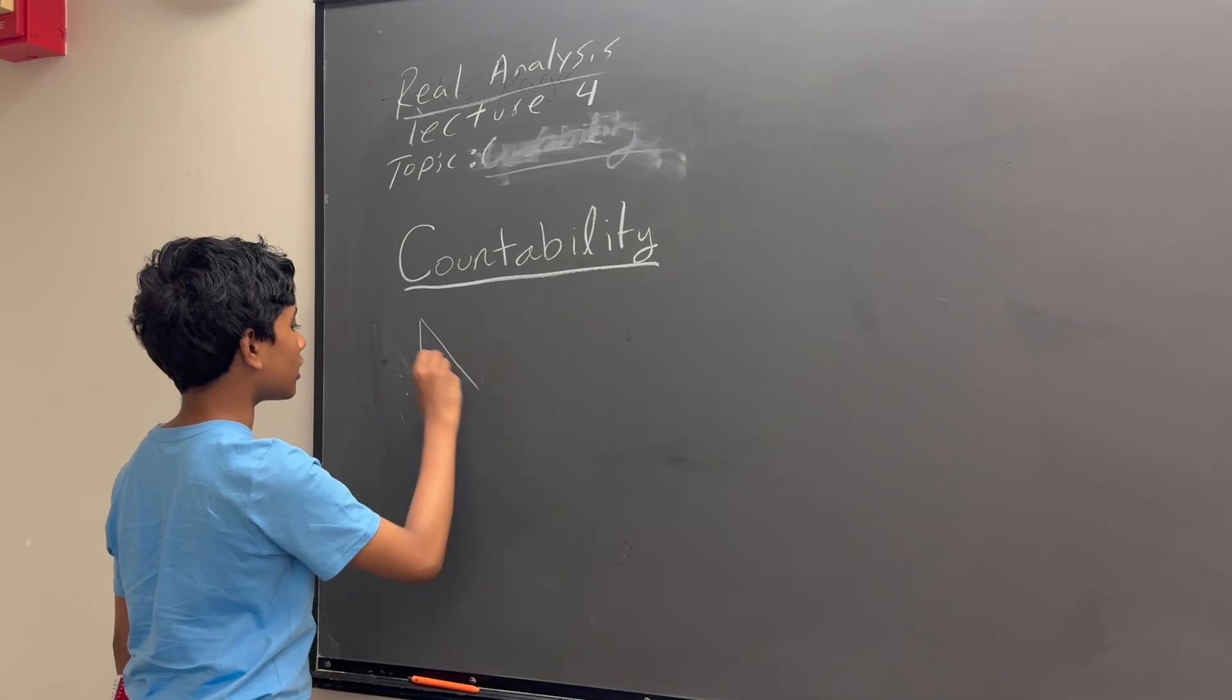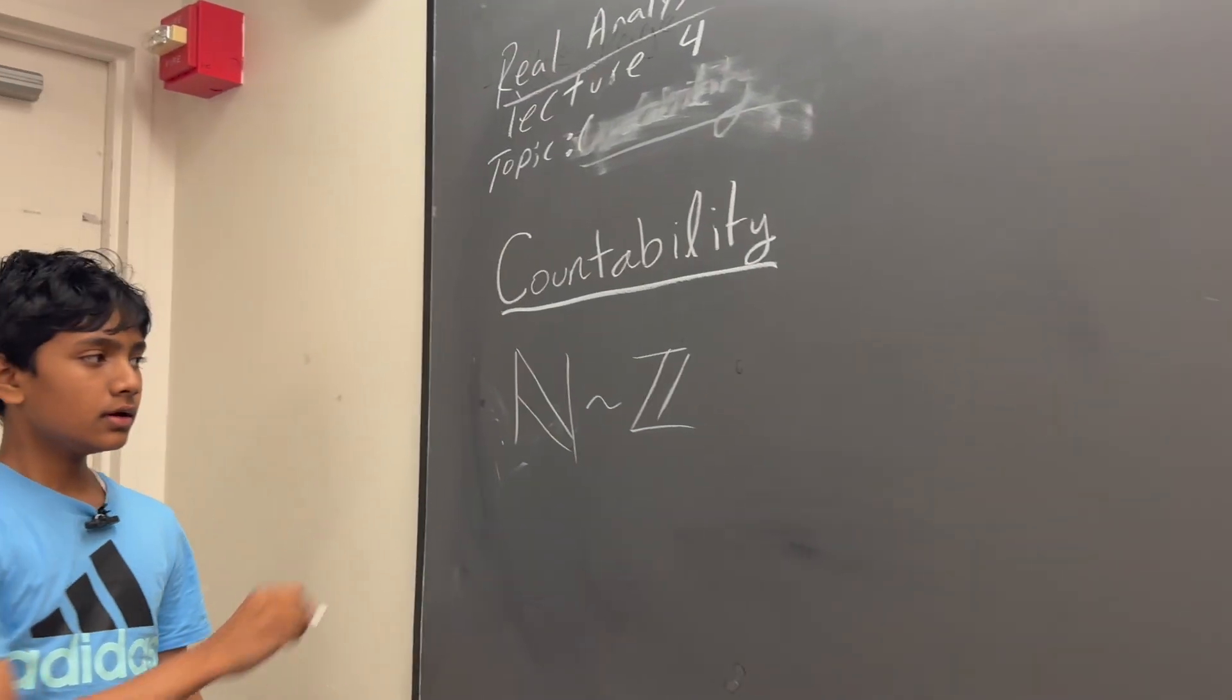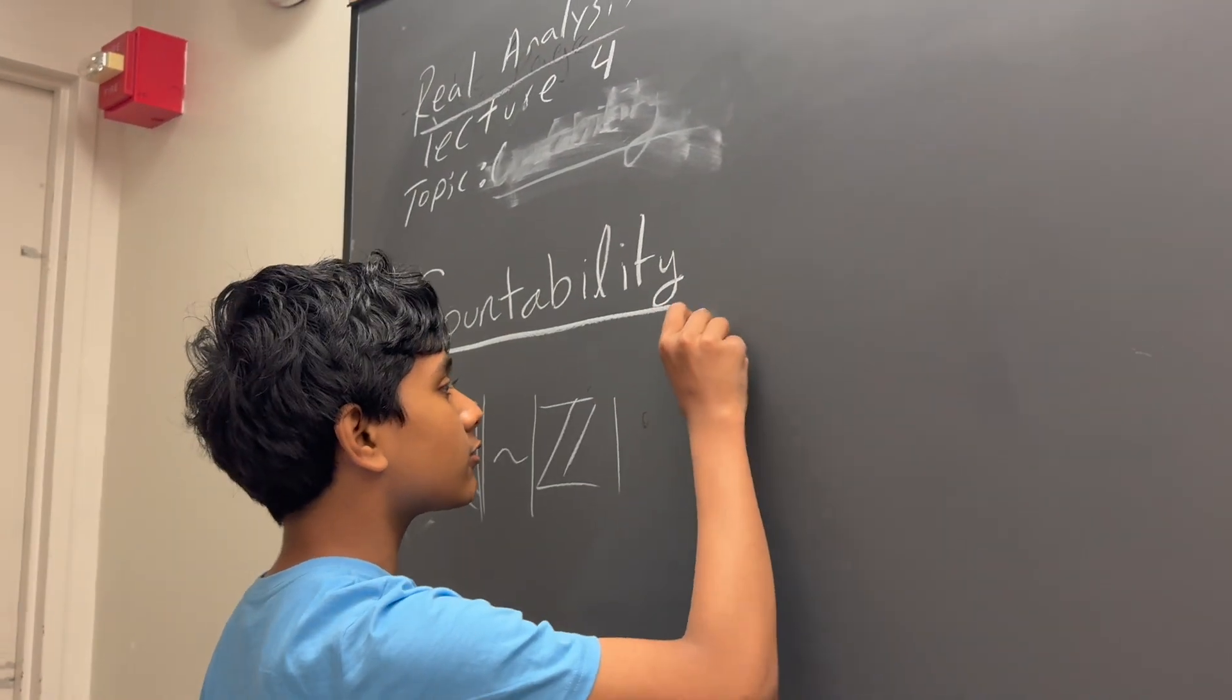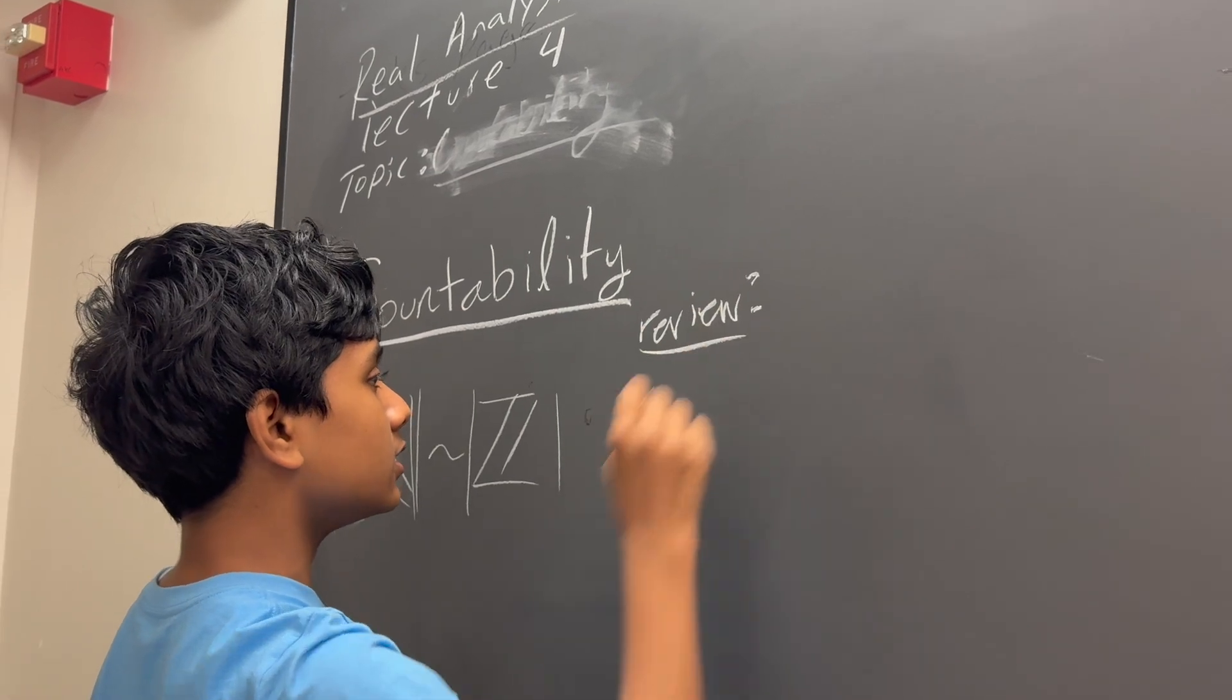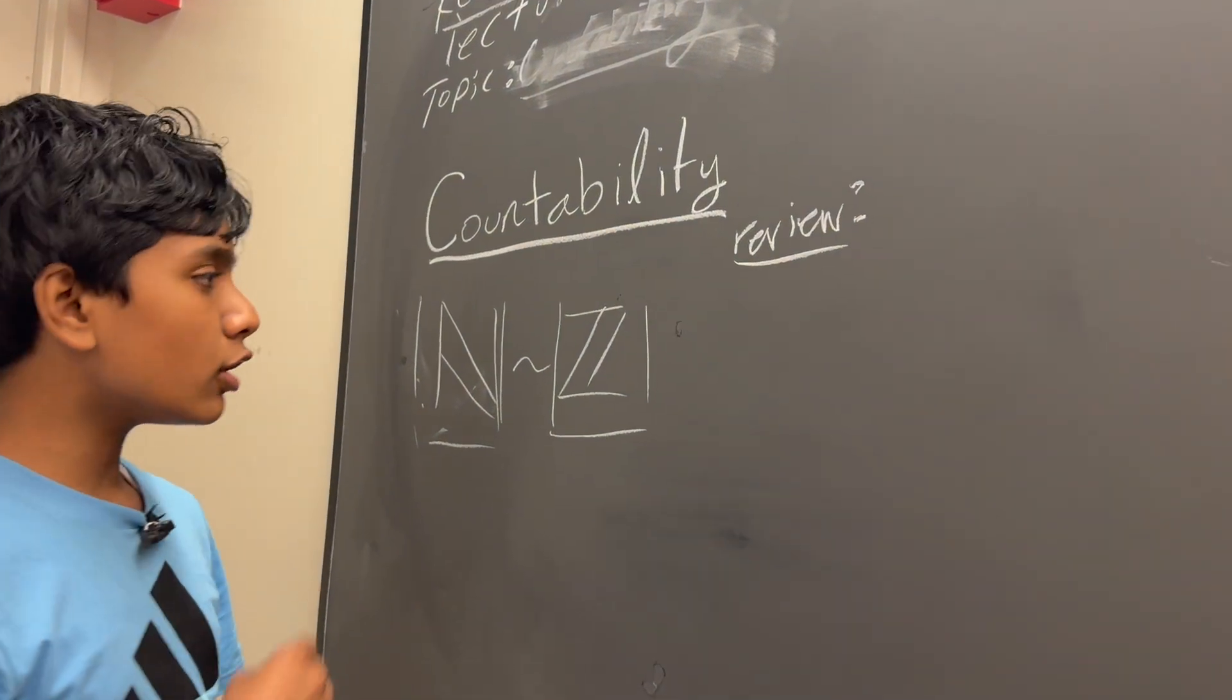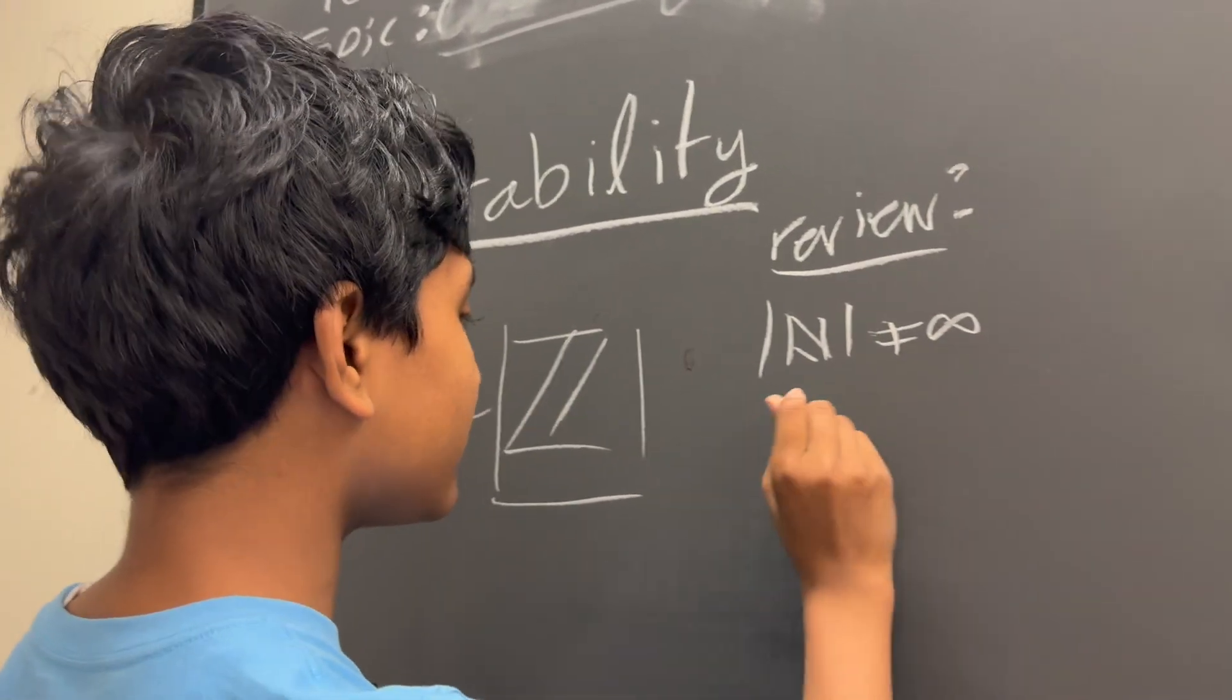Last time, if you noticed, we talked about the real numbers and how they were the same in terms of cardinality as the integers. Confused? Let's do a quick review. The cardinality of a finite set is just how many elements are in it, but the cardinality of an infinite set, like the natural numbers, we can't just say it's infinity. We have to actually specify.